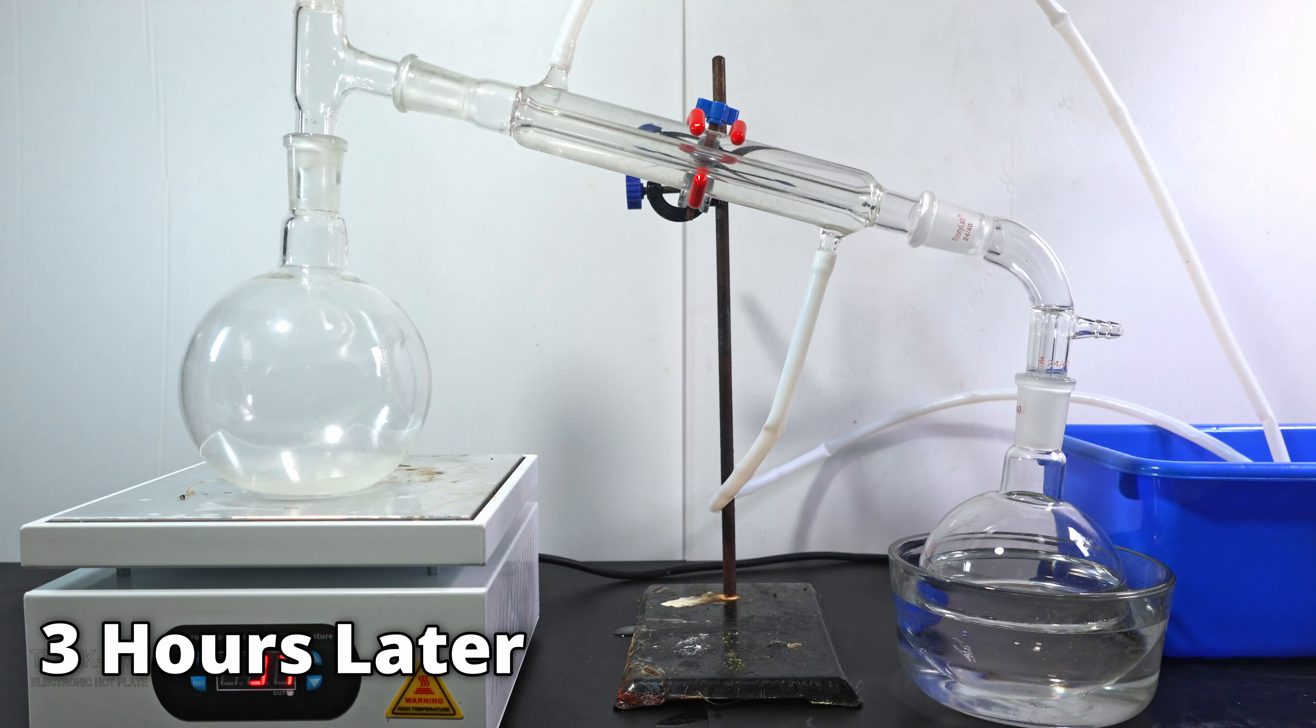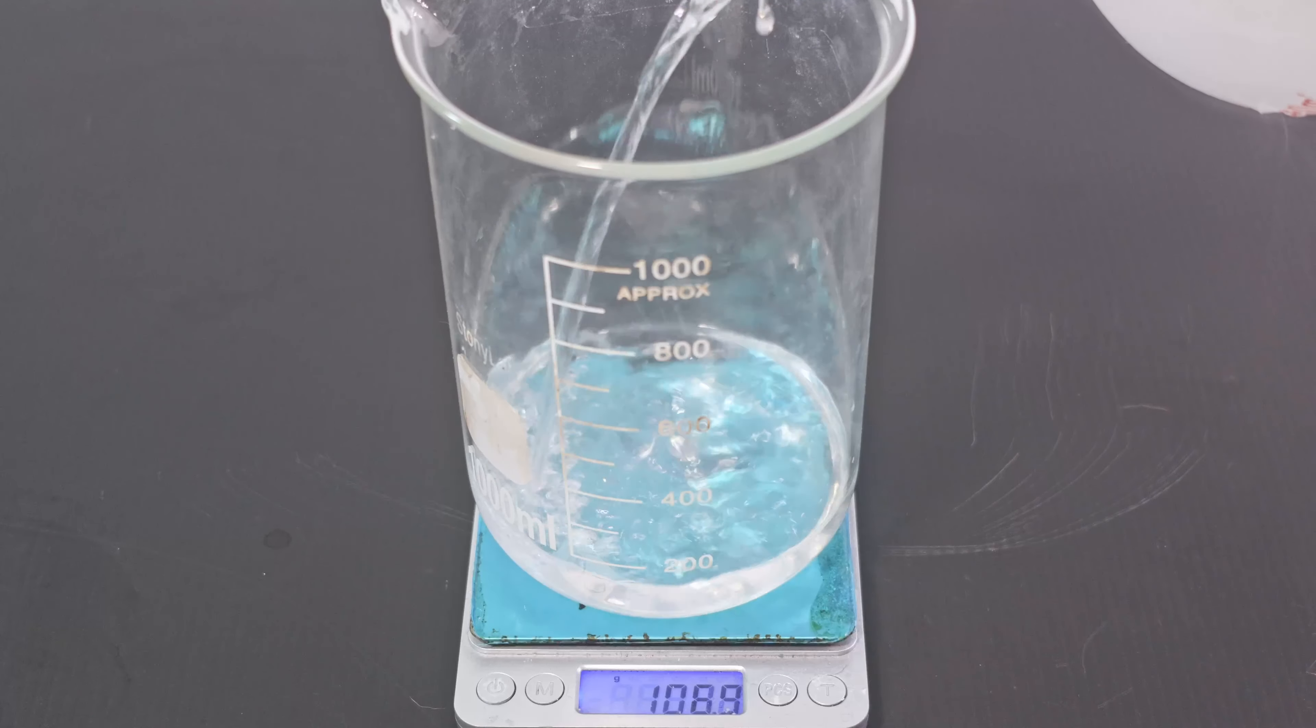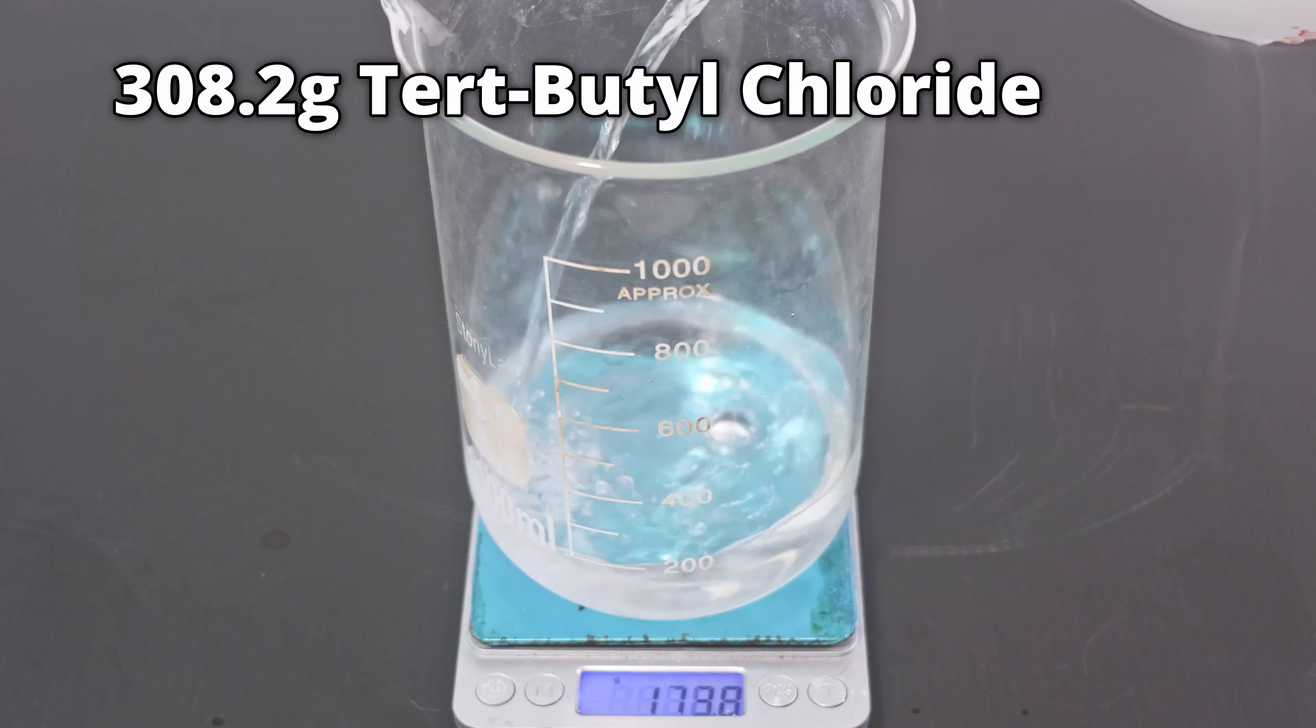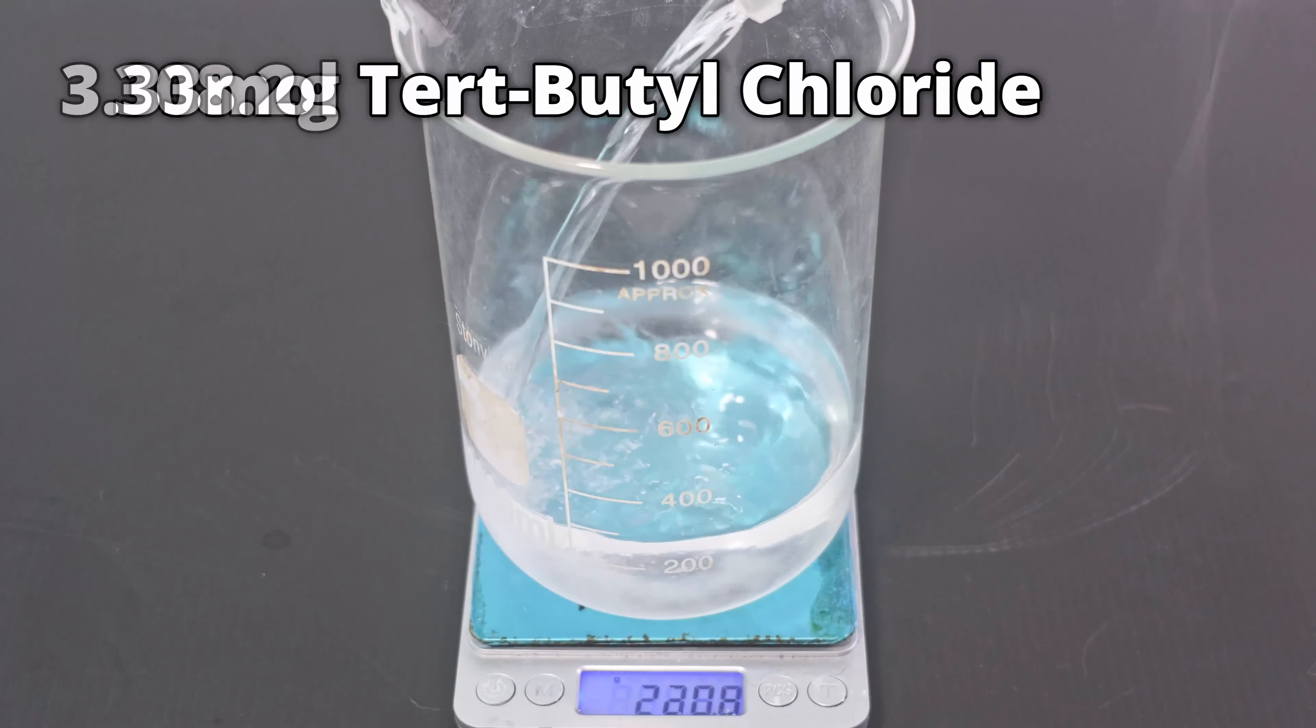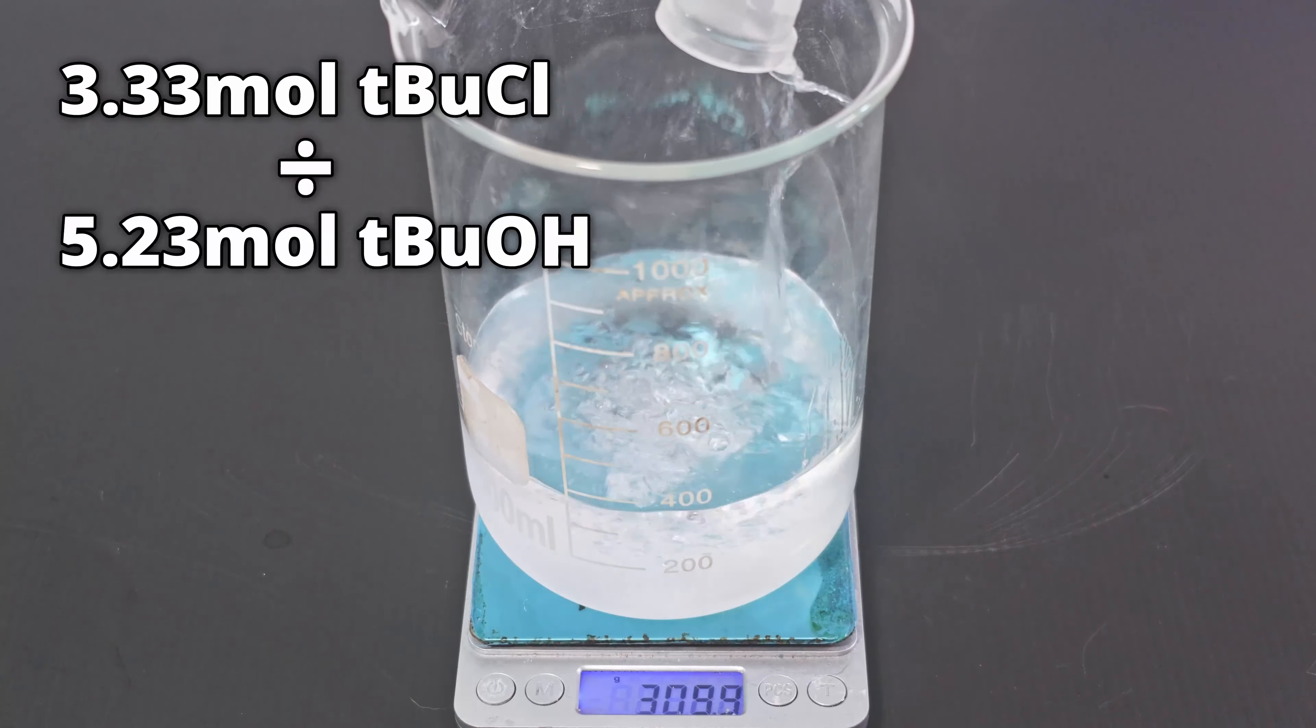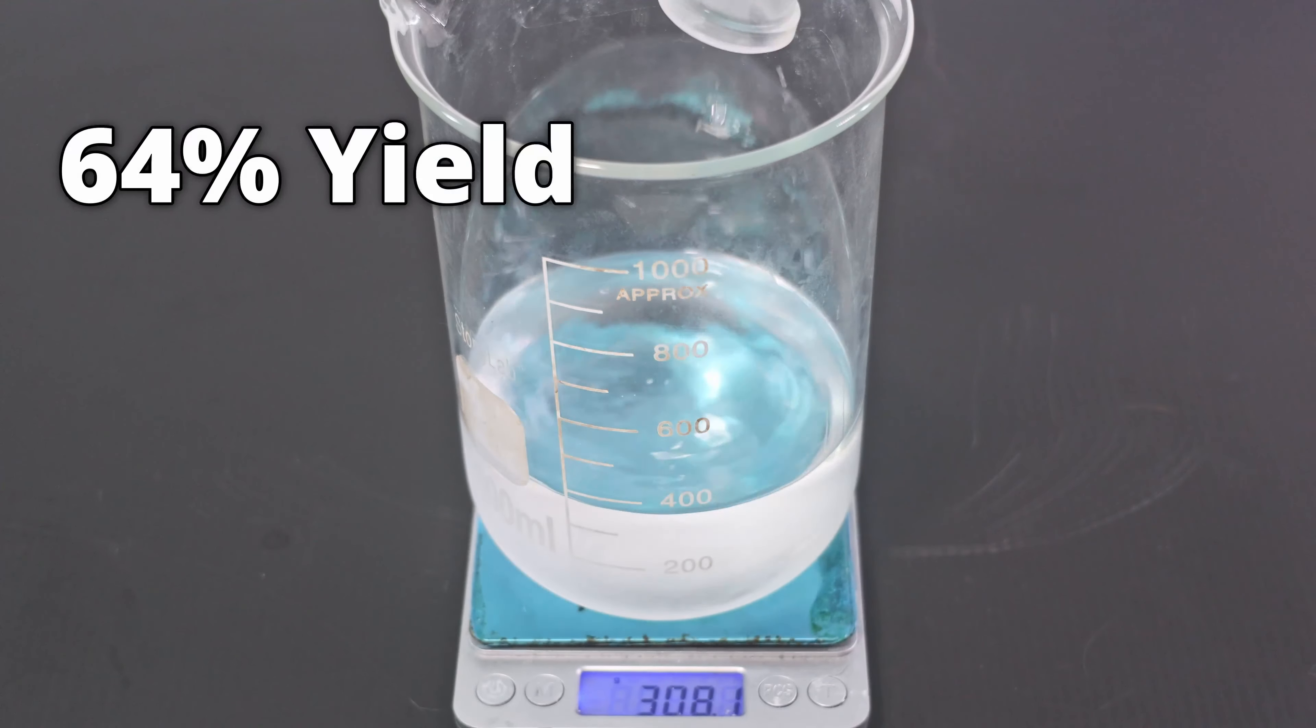Three hours later, the distillation is done. In total, I collected 308.2 grams of tert-butyl chloride. This is approximately 3.33 moles of tert-butyl chloride. With respect to the tert-butanol I used, I got a 64% yield.